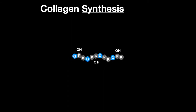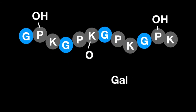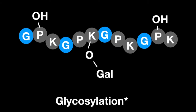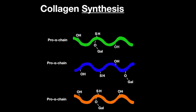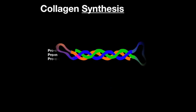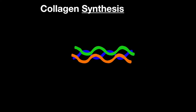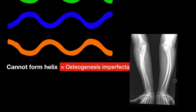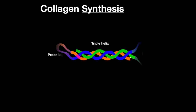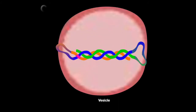Individual chains of collagen called pro-alpha chains are glycosylated at hydroxylysine residues. Three alpha chains then come together via hydrogen bonds and disulfide bridges into a triple helix. If they cannot come together into a triple helix, this leads to a condition called osteogenesis imperfecta. The triple helix is then exocytosed from the cell into the ECM.